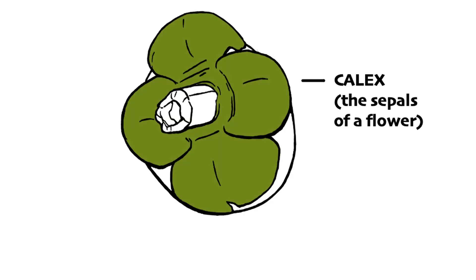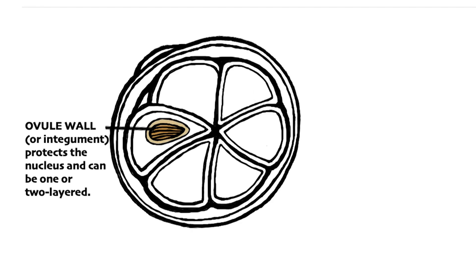The calyx of a mangosteen is the corolla of a fruit. The ovule walls are what seeds wear like a suit.